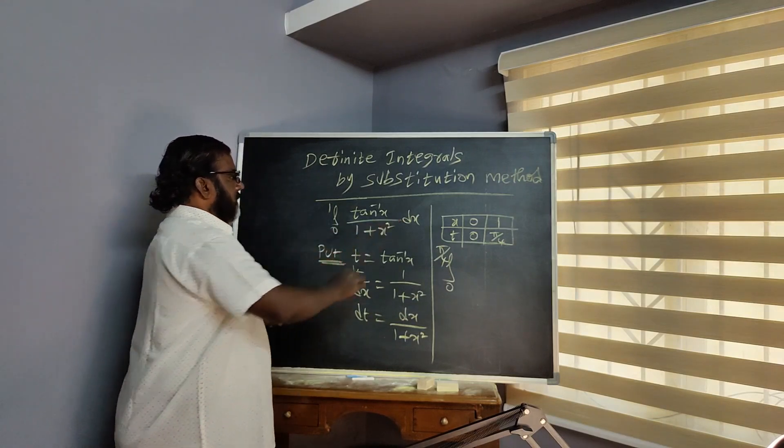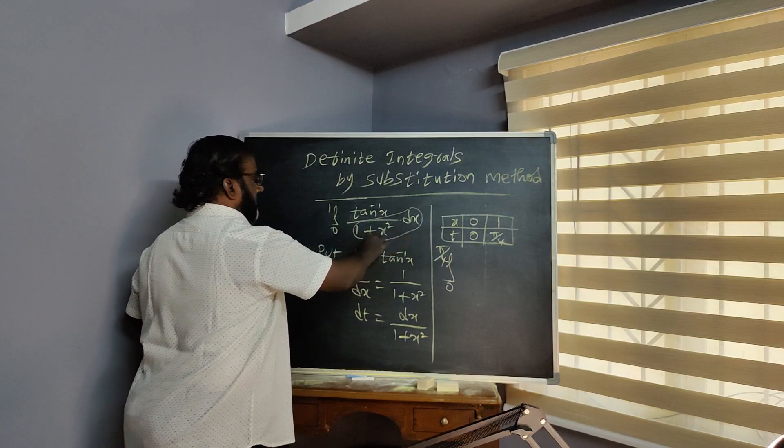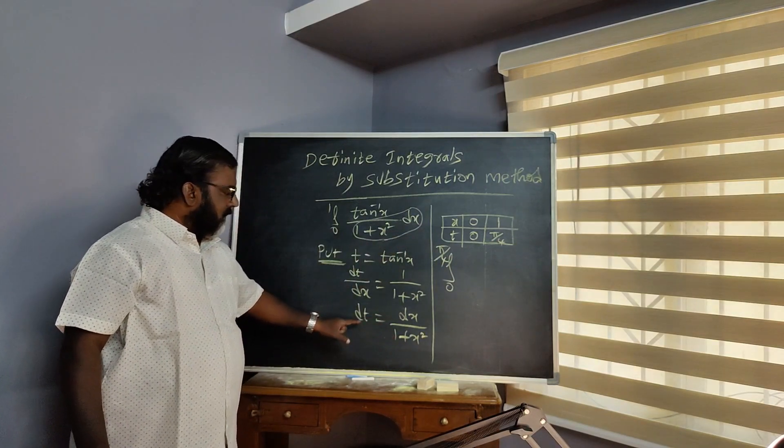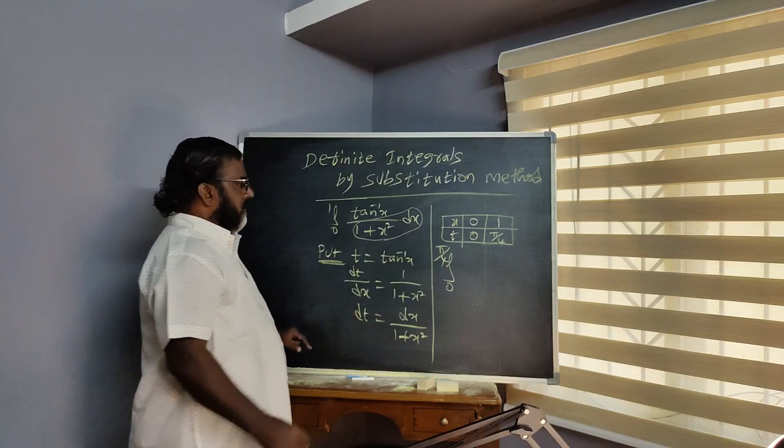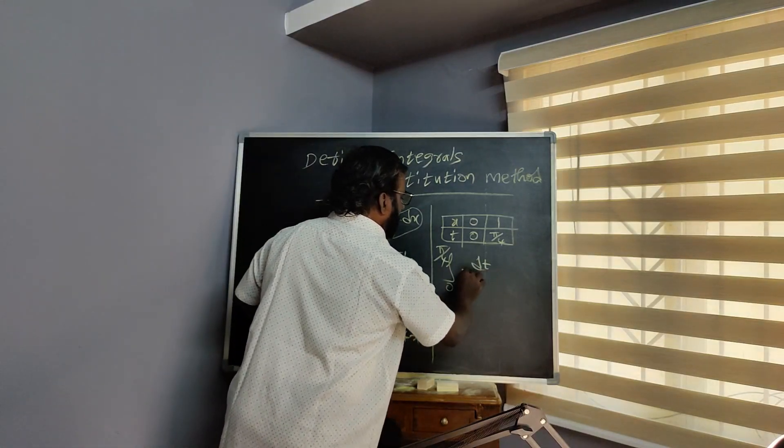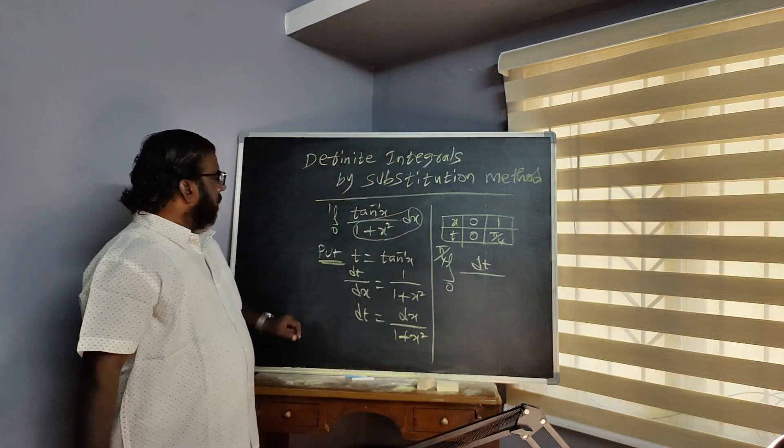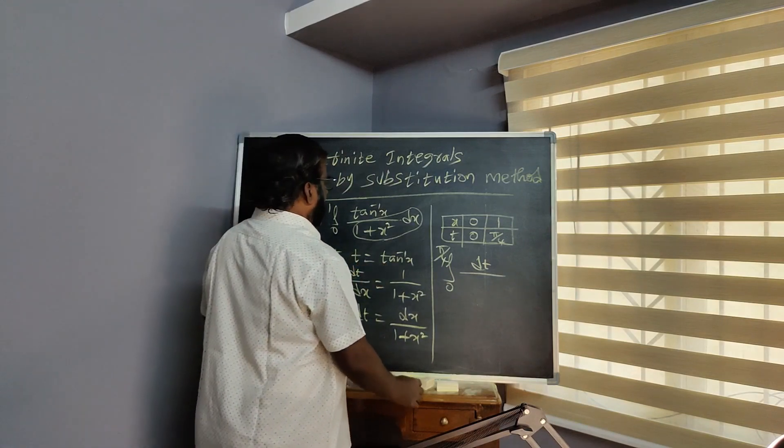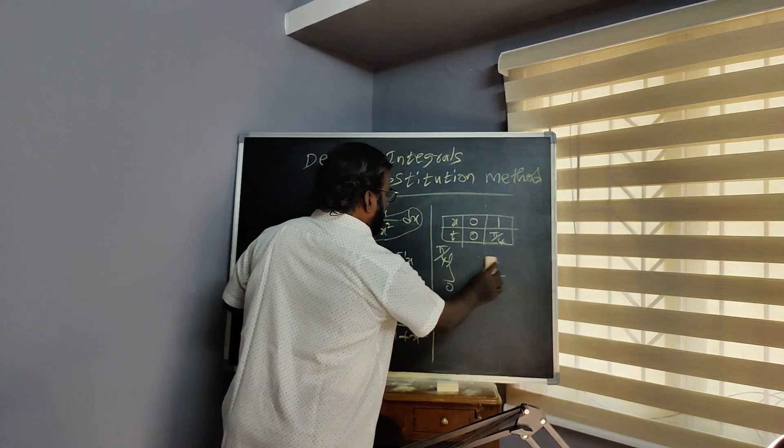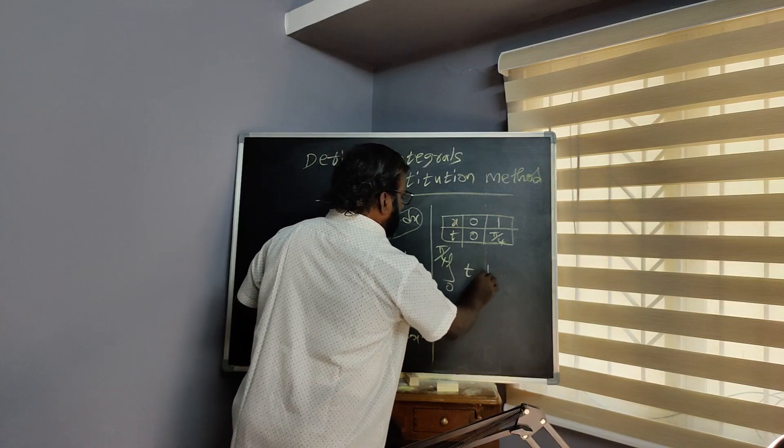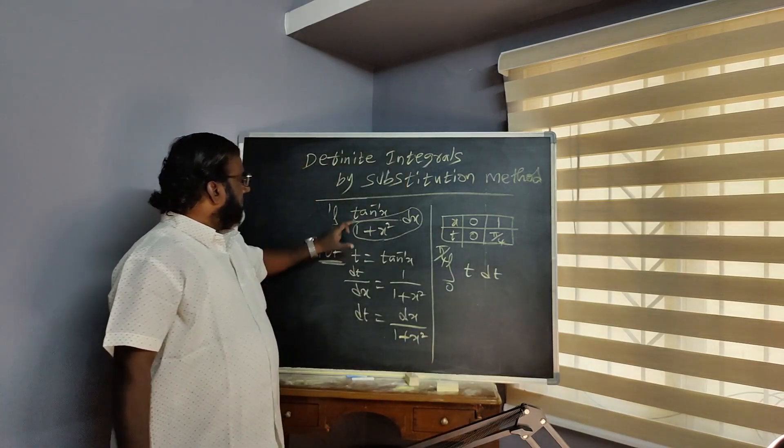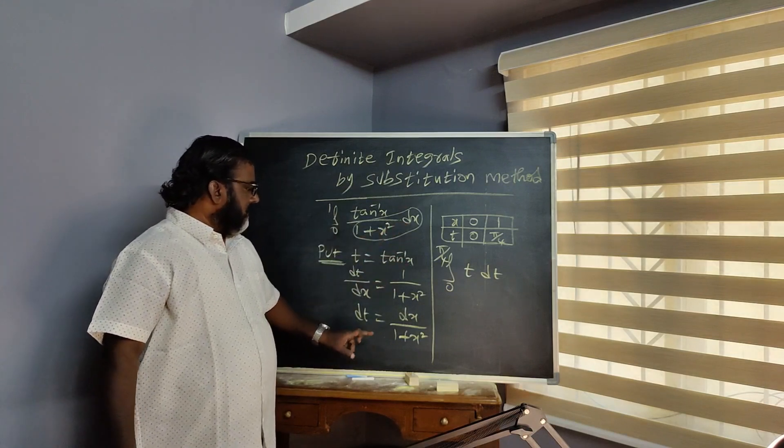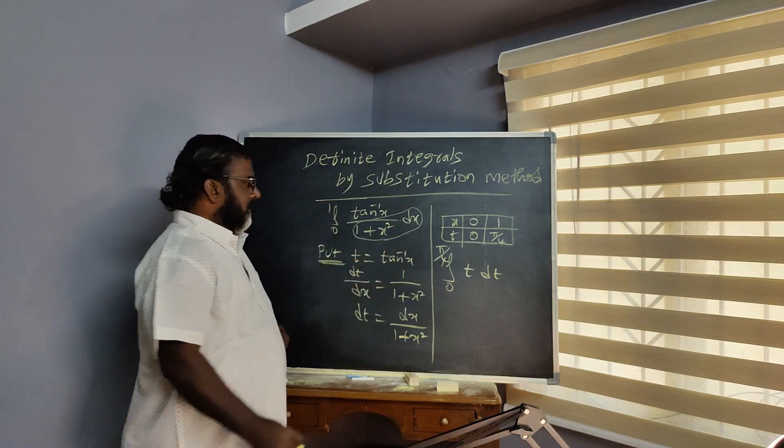Now, dX by 1 plus X square is equal to dT, and tan inverse X is T. So we have integral from 0 to pi by 4 of T dT.